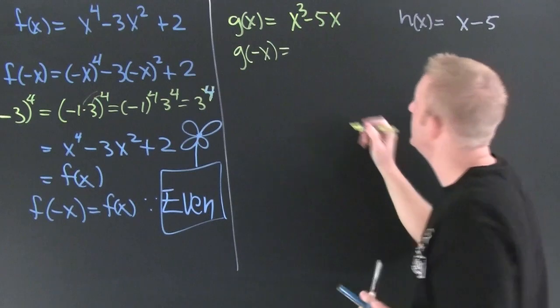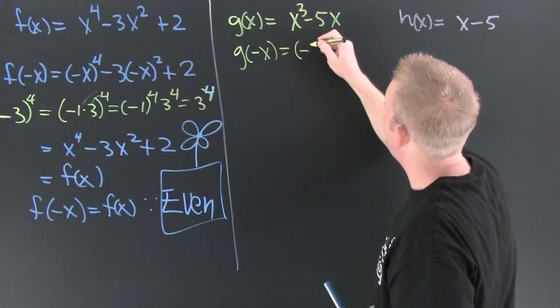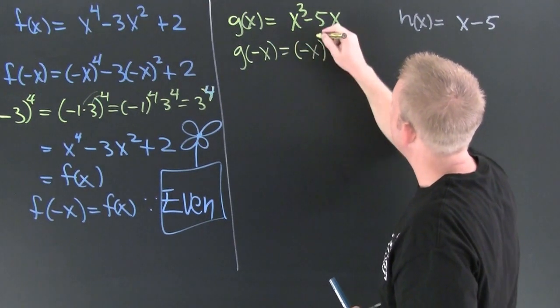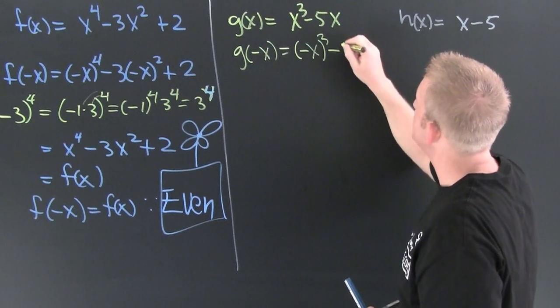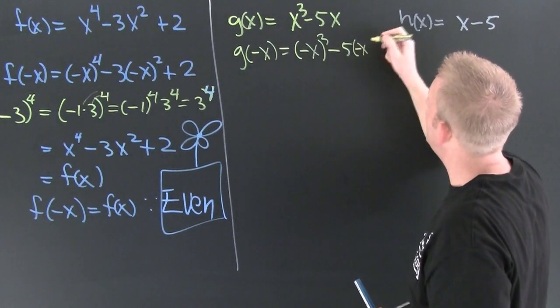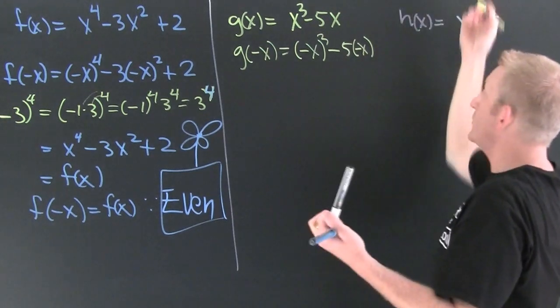Then I go, when I throw that in there, this is minus x to the third minus five times minus x. Okay.